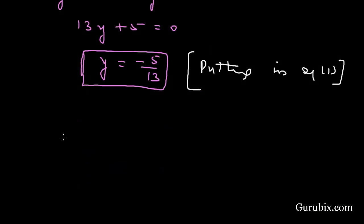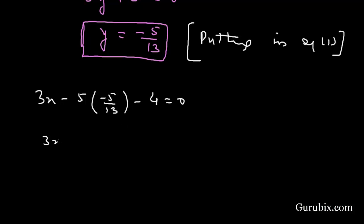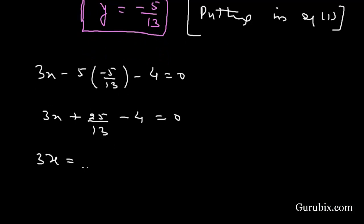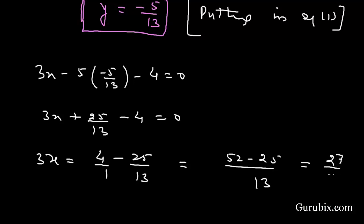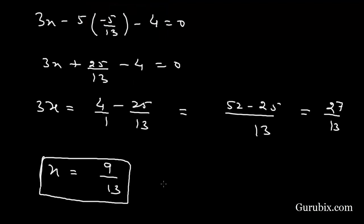We substitute y = −5/13 into equation number 1: 3x − 5·(−5/13) − 4 = 0, so 3x + 25/13 − 4 = 0. Then 3x = 4 − 25/13 = 52/13 − 25/13 = 27/13. Therefore x = 9/13. So x = 9/13 and y = −5/13.